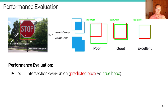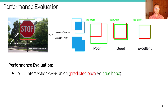Suppose our object detector returns the red box as the predicted detection, but the true box is the green box annotated by the annotator. The intersection over union measures the area of overlap of these two boxes divided by the area of their union. If both boxes are the same, this number is one, but that's very hard to achieve. In practice, we're happy if IOU is 0.9, and 0.7 is already a pretty good detector. Below 0.5, the alignment is not high, so we call it a poor detection.